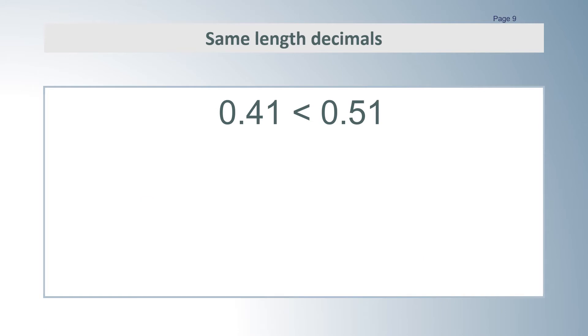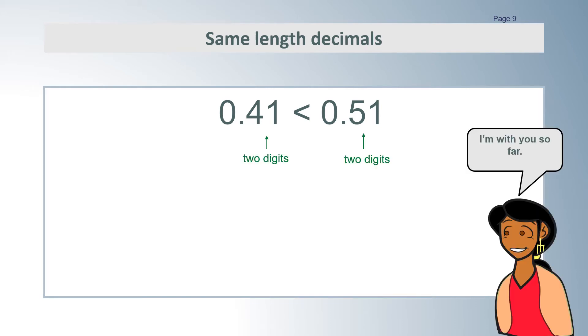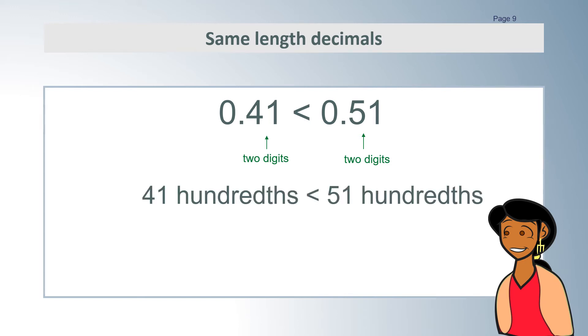0.41 is less than 0.51. This example is like the previous one. Both numbers have the same number of digits after the decimal point. We can use our understanding of how whole numbers behave to work out which is bigger. So we can tell that 0.51 is larger.